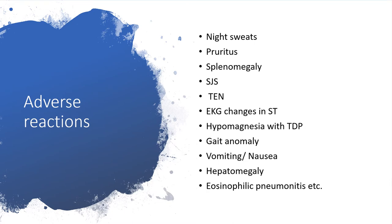Further adverse reactions include night sweats, pruritus, and on physical examination we could pick up splenomegaly. Stevens-Johnson syndrome or toxic epidermal necrolysis could occur. On EKG, we could find changes in QT segments. Low levels of magnesium will lead to torsades de pointes, which could degenerate to ventricular arrhythmia. If it is polymorphic ventricular arrhythmia, it could degenerate to ventricular fibrillation if not corrected on time.